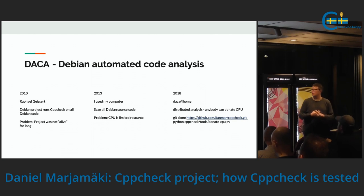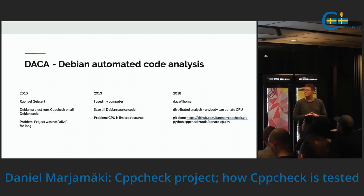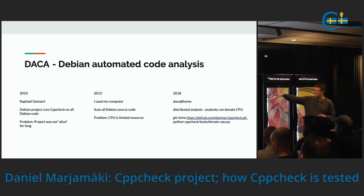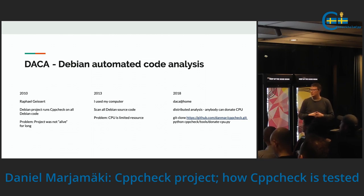The problem with that was that CPU is a very limited resource — on a normal computer it takes weeks to analyze Debian source code. And in 2018 I started a new script called Dacca at Home, where contributors — anybody — can donate CPU on their computer when they go home. You run a small, simple script. It says down here on the screen — I know it's hard to see the bottom half unfortunately — but you can run these two commands and then you donate CPU.